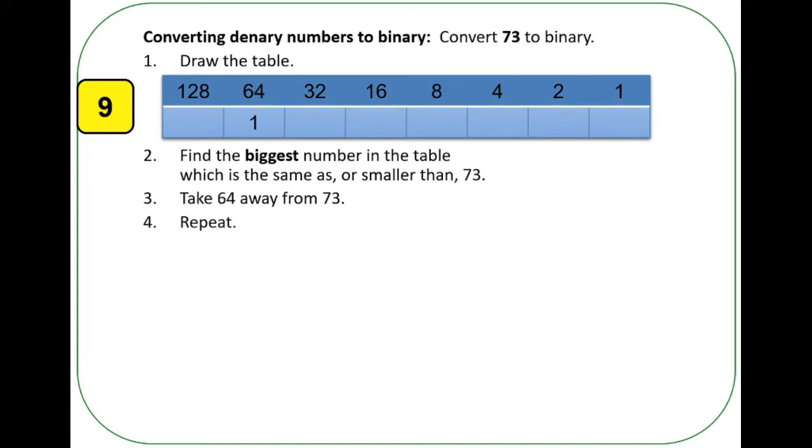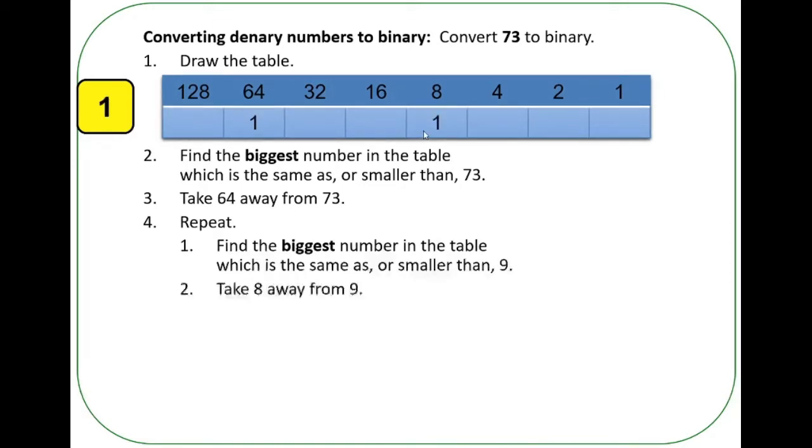Then we do the same thing again. We now are only looking at 9. You can probably see what it's going to be, but let's run through the process. Take the biggest number in the table which is the same as or smaller than—well, of course that's 8. Take 8 away from 9, you get 1.